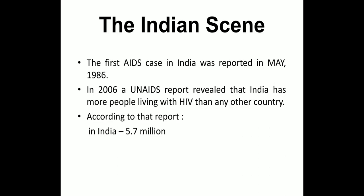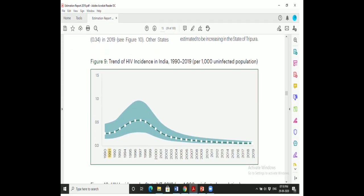Looking at the Indian scene, thanks to Dr. Suniti Solomon, the first AIDS case in India was reported in May 1986 from Chennai. From that time onwards, cases of HIV steadily spiraled upwards, and as of the UNAIDS report in 2006, there were about 5.7 million people in India, higher than in any other country. The present scenario is much more comforting. According to the NACO, the National AIDS Control Organization report of 2019, there has been a steady decline since 2010 of around 37%.